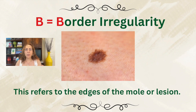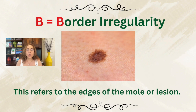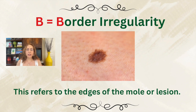Next, we have B for border irregularity. This refers to the edges of the mole or lesion. In a normal, benign mole, the borders should be smooth, even, and well-defined. But in melanoma, the border is often irregular, notched, blurred, or scalloped.